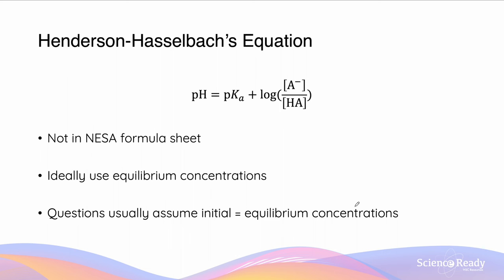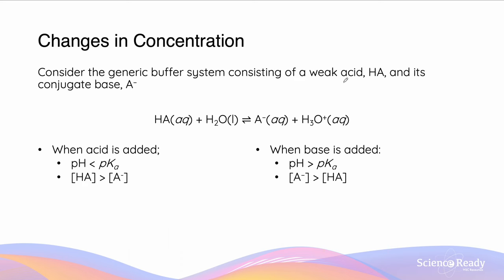The Henderson-Hasselbalch equation is not given on the formula sheet, however it can be used for calculating equilibrium concentrations given a pKa value, and for questions which assume initial concentration equals equilibrium concentration. For a generic buffer system of weak acid HA and conjugate base A⁻: when we add acid, the equilibrium shifts left, increasing [HA] and decreasing [A⁻], so pH is less than pKa. Conversely, when pH is greater than pKa, we have introduced more OH⁻, the equilibrium shifts right, and the conjugate base concentration is greater than the acid concentration.